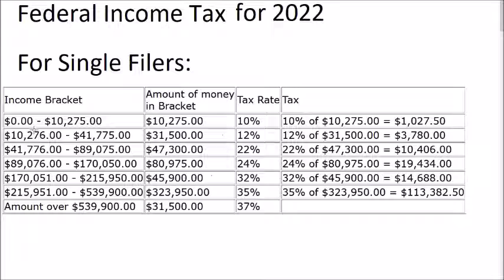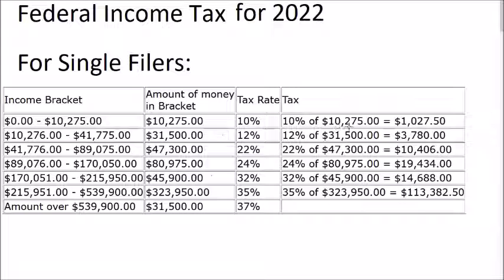This is the tax table for single filers for the year 2022. We have income brackets from zero to $10,275, which has a tax rate of 10%. Ten percent of the maximum amount in this bracket — 10% of $10,275 — is $1,027.50. The next tax bracket is $10,276 to $41,775.